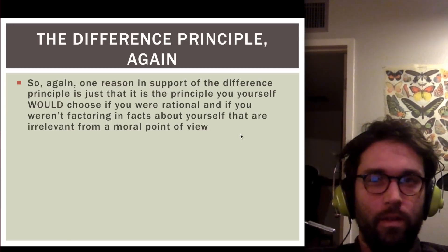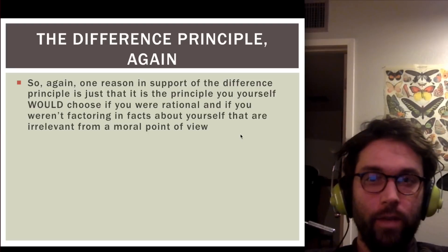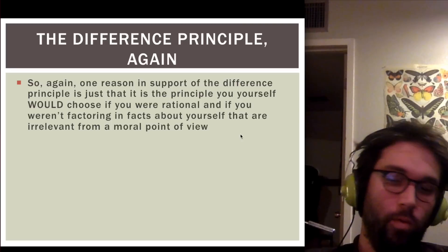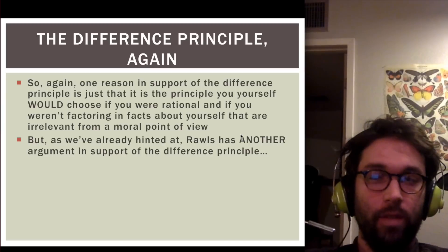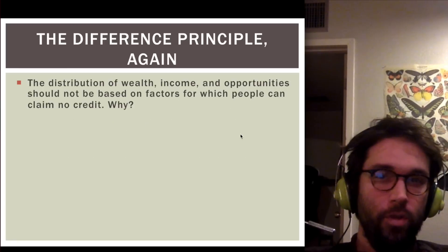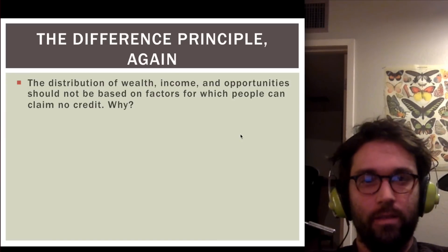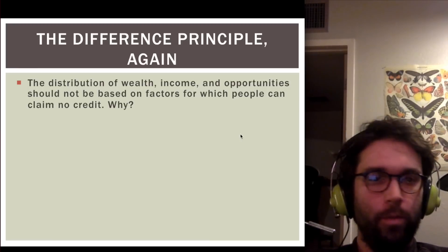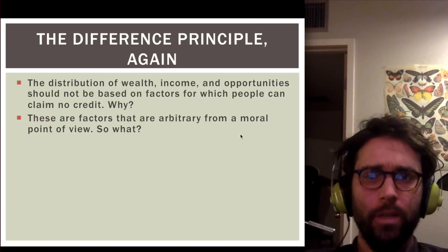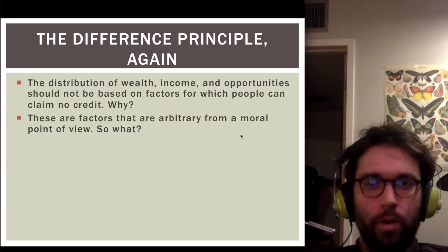Rawls has another argument in support of the difference principle. The distribution of wealth, income, and opportunities should not be based on factors for which people can claim no credit — those factors, like race, sex, gender, socioeconomic standing, and talents you happen to have, are arbitrary from a moral point of view. We shouldn't be consulting morally irrelevant things when looking for correct principles of justice.